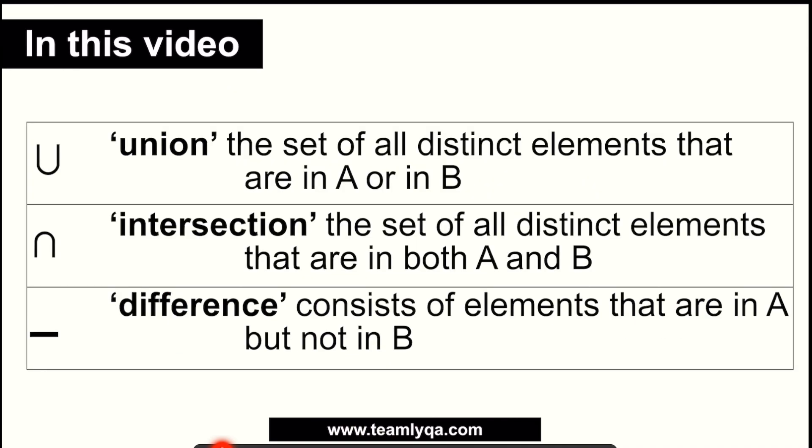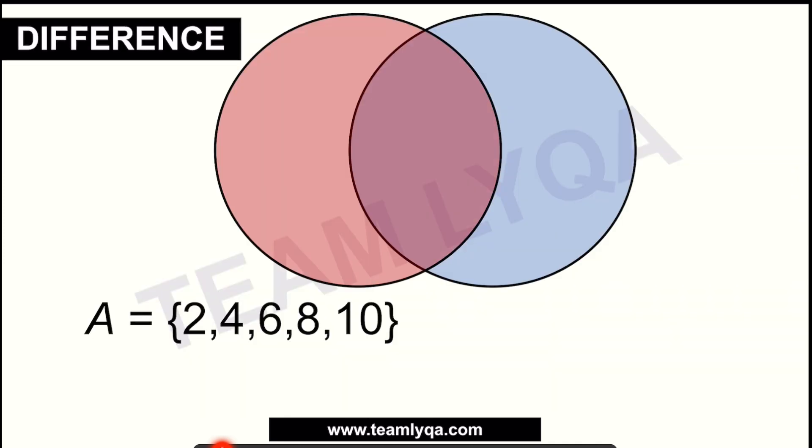Next, we have difference. Now this part confuses some people. But it's actually really easy, especially if you use the Venn diagram. Difference consists of elements that are in set A but not in set B. Now let's look at our drawing from earlier. Again, same thing. Let me replicate it. You have 2 and 4 here. You have 6, 8, and 10. Then you have here 1, 3, and 5.